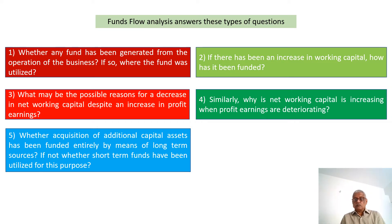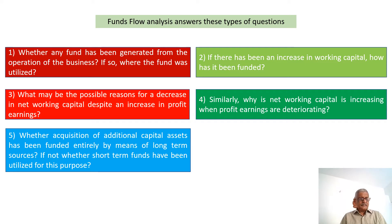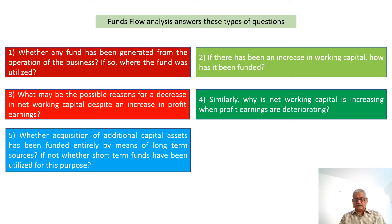Fourth: why is net working capital increasing when profit earnings are deteriorating? There is a decline in profit, but still the margin for working capital keeps on increasing. How is it possible?